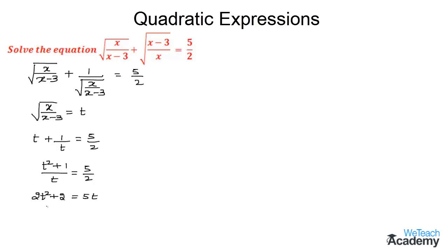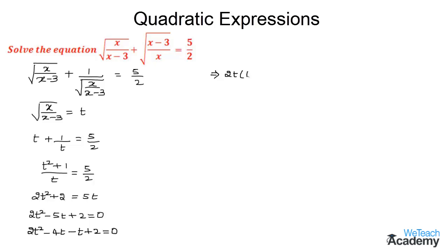Now transfer 5t to the left hand side. We get 2t squared minus 5t plus 2 is equal to 0. Now let us take 2t as a common factor from the first two terms. So we get 2t into (t minus 2), minus 1 into (t minus 2), is equal to 0.